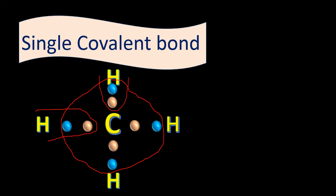So in the case of a single covalent bond, every atom shares its one electron with every other atom, and in this way carbon and hydrogen both get stable.